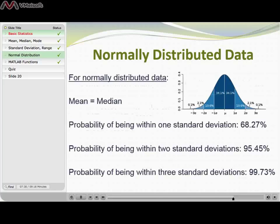95.45 percent of the population has an IQ score that is within two standard deviations of the mean, so that would be between 70 and 130. And 99.73 percent of the population are within three standard deviations of the mean, so they would have an IQ score between 55 and 145.